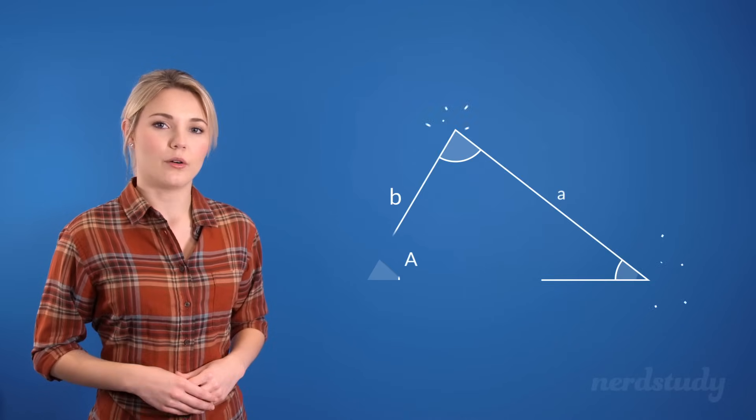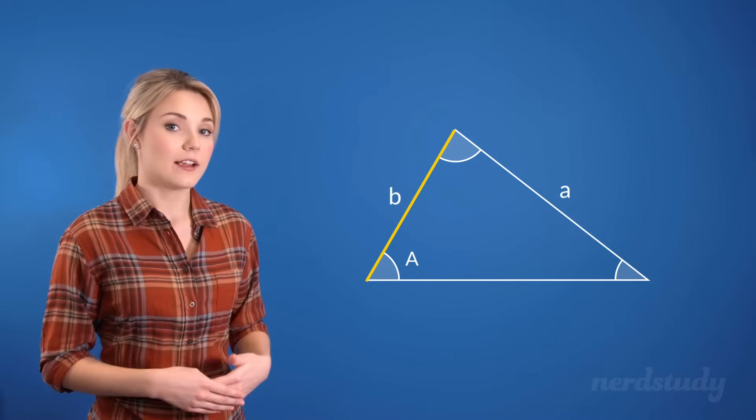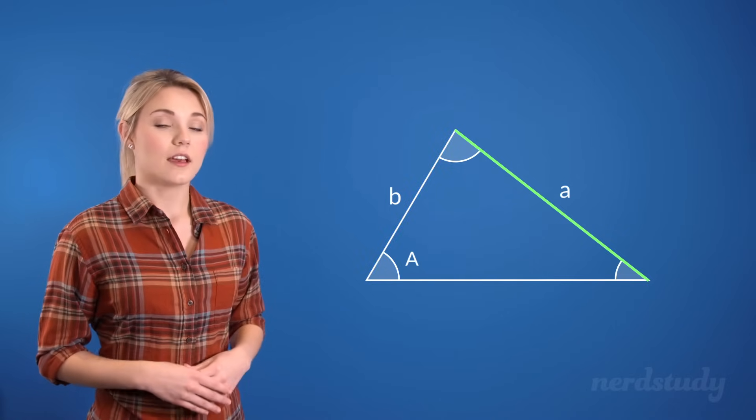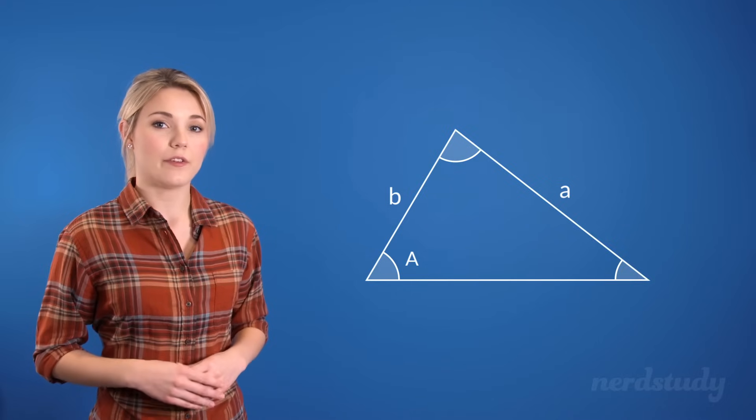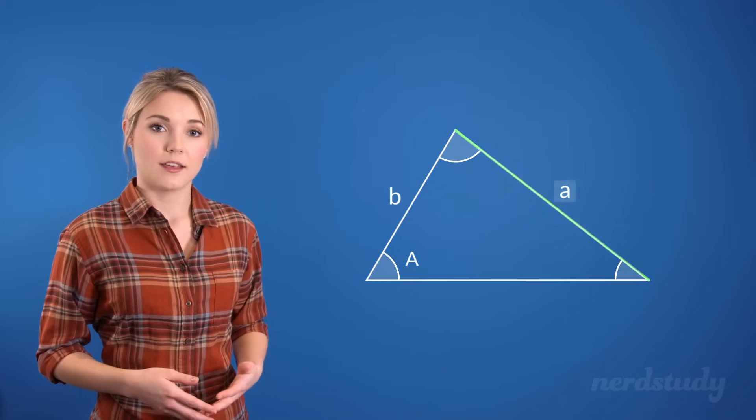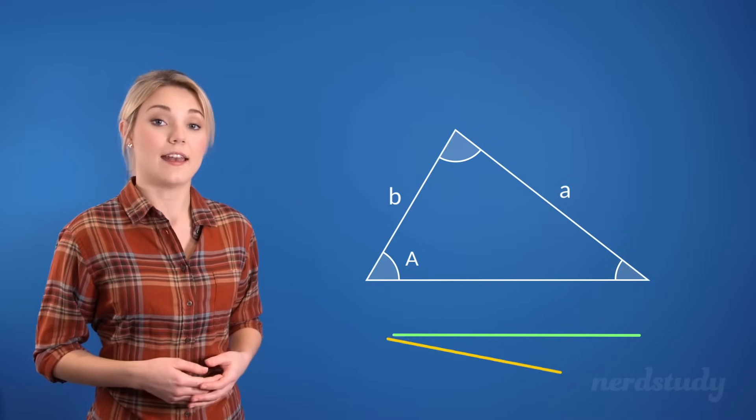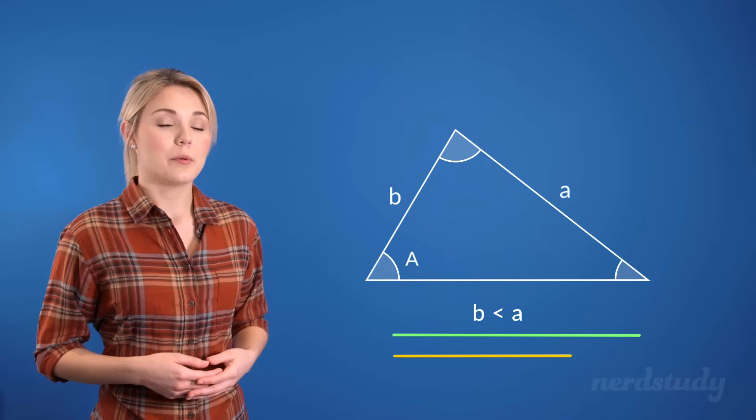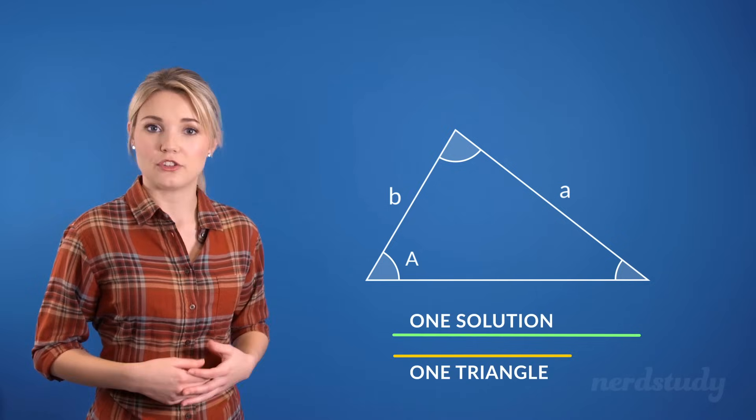If we have a triangle where we're given the acute angle A, the length of the side next to the angle, and the length of the side opposite to the angle, it is important to compare the two values of these side lengths. If the opposite side length is longer than the side length of the side next to the angle, then we would definitely only have one possible triangle created, aka one solution.